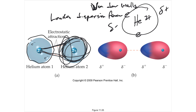That instantaneous dipole could then induce another one next door — it could push or pull the electrons in a neighboring atom to one side. In that moment, the electrons drift to one side and you end up with an attraction. That's called a London dispersion force, and it's the weakest of all the intermolecular forces. But it is a force — there is an attraction, even though it's a very weak one.